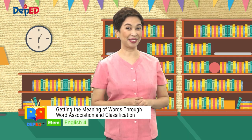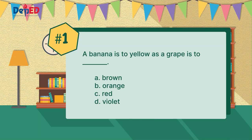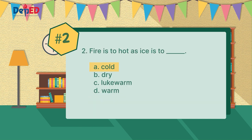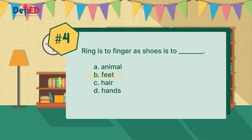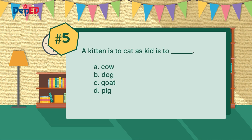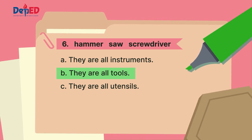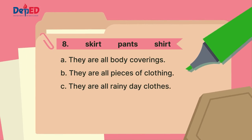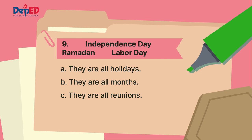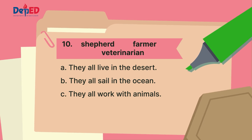Done? Good! Let us now check your work to see how well you understood our lesson. The answer for number one is letter D. For number two, it's letter A. The third answer is letter D. The answer for number four is letter B. For number five, it's letter C. For number six, the answer is letter B. For number seven, it's letter B. For number eight, it's letter B. The answer for number nine is letter A. And for number ten, the correct answer is letter C.